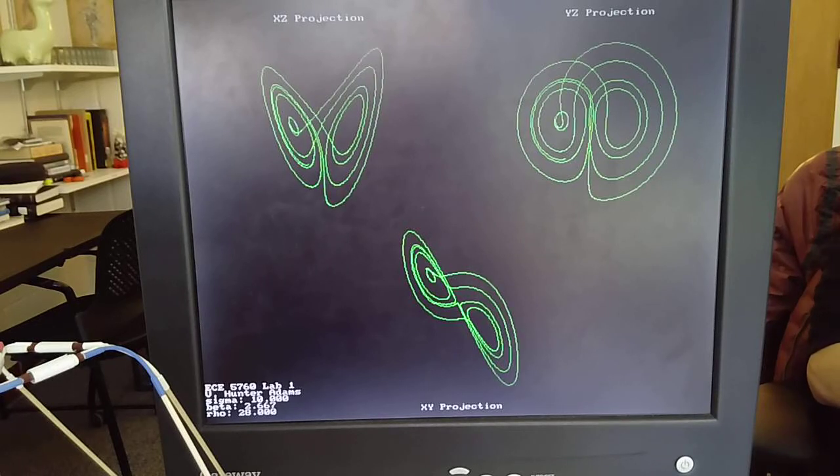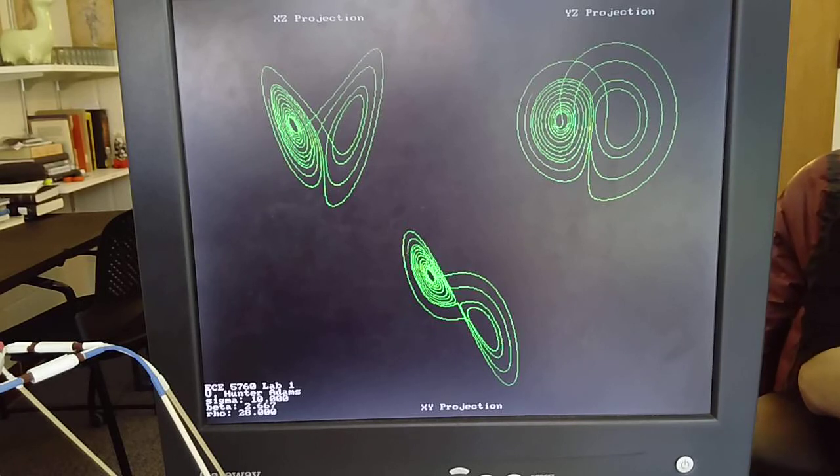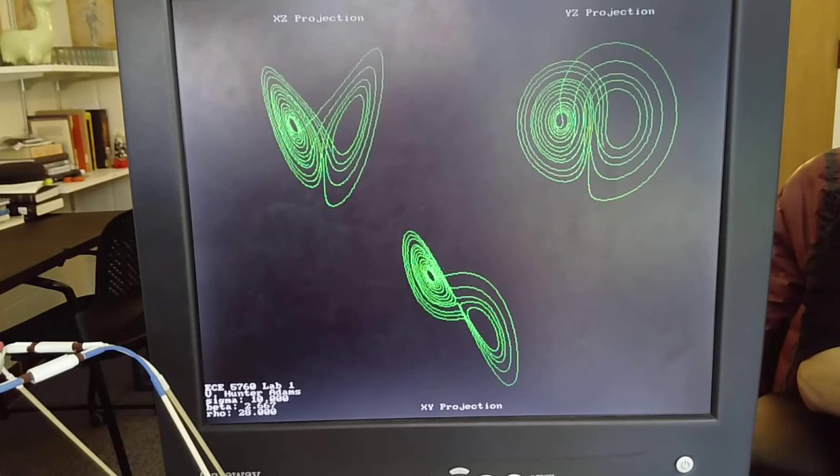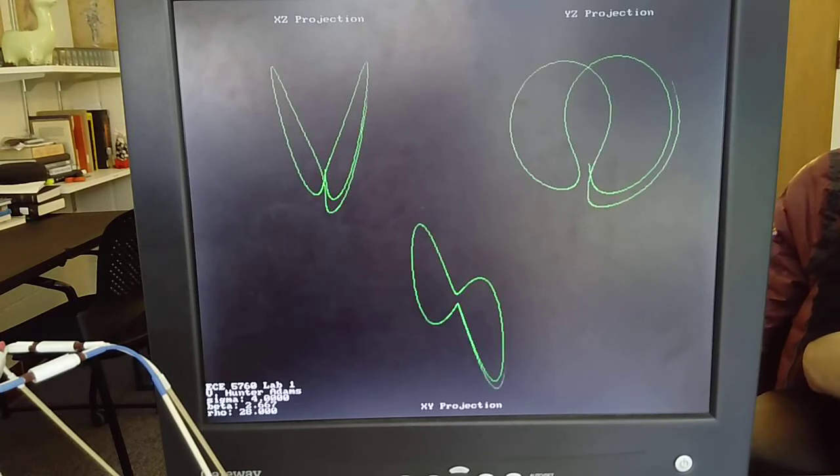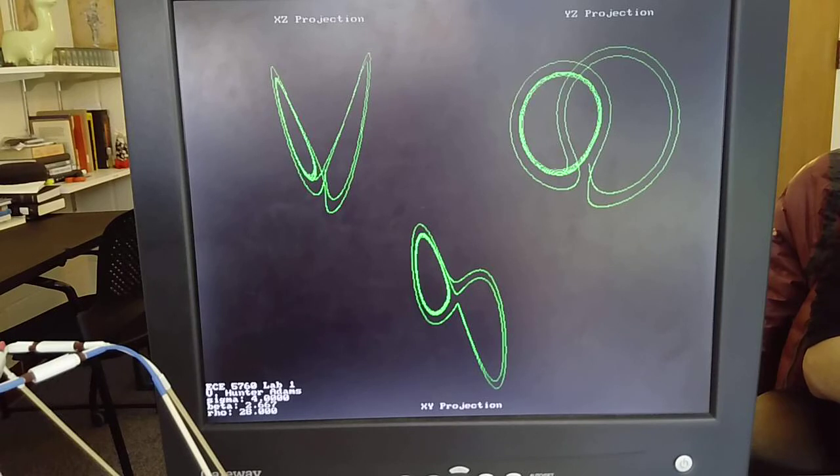The system also supports dynamically changing the parameter values for sigma, beta, and rho. I will now change the value of sigma from 10 to 4, and you can see in the lower left corner of the screen the value next to sigma has changed from 10 to 4. You can also see that the shape of the curves has changed with these new parameter settings.